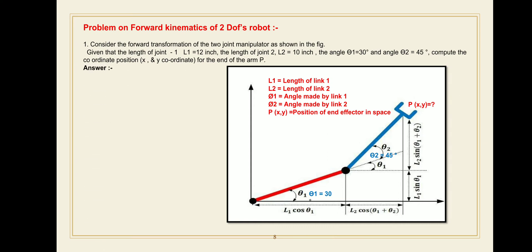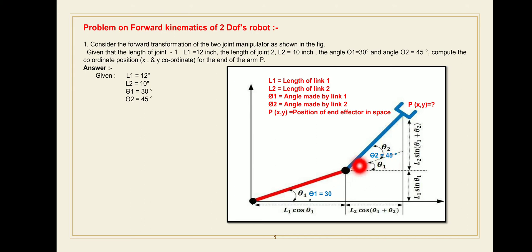First, let's list the given parameters. l1, the length of link one, is 12. l2, the length of link two, is 10. Theta1, the angle between the axis of link one and the horizontal plane, is 30 degrees. Theta2, the angle between the axis of link one and the axis of link two, is 45 degrees. You have to find the unknown position of the end effector — x coordinate and y coordinate of point P.